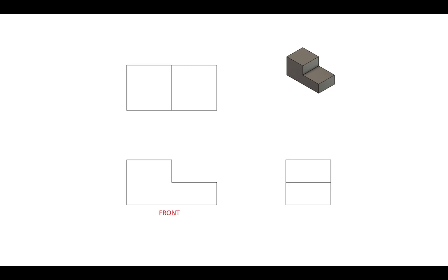Here we have three standard orthographic views of a simple part showing front, top, and right side projections. This dimension is used to define the feature that exists between two surfaces. We refer to this as a feature of size.